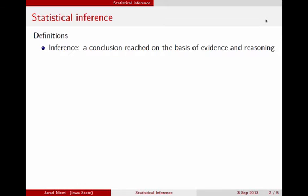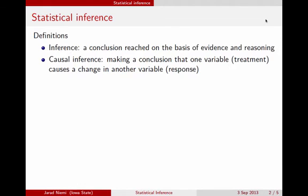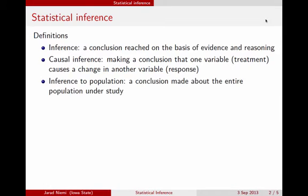We'll be particularly interested in two aspects of inference. The first is causal inference — that is, whether we can make a statement about one variable, often called the treatment, causing a change in another variable called the response. The other issue is whether we can generalize the statement we're making to a bigger population, or if we have to restrict ourselves to making statements about the population we actually have in our study.